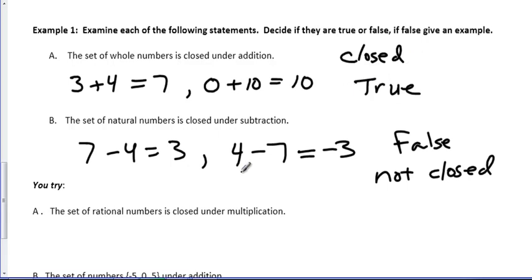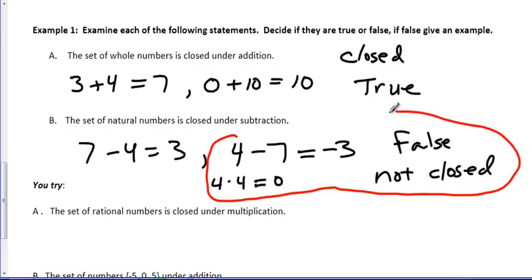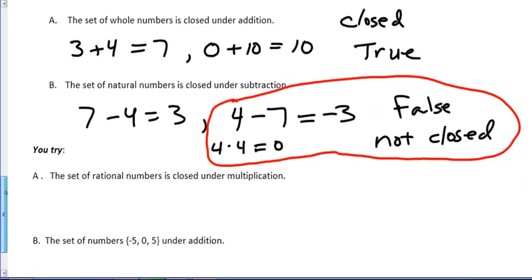There's other examples you could think of. There's an infinite number of examples. But if I were to say 4 minus 4, that's 0. 0 is not a natural number. So these are my examples that prove that this is not closed.